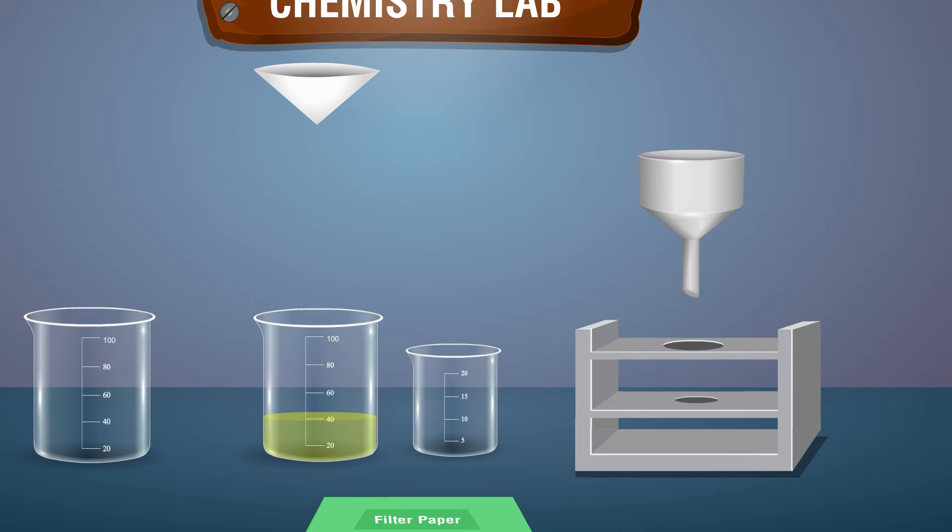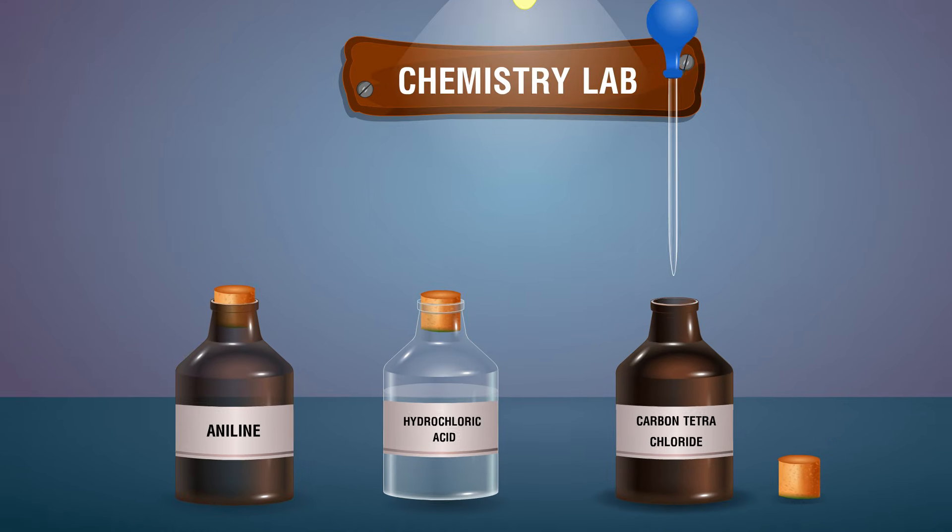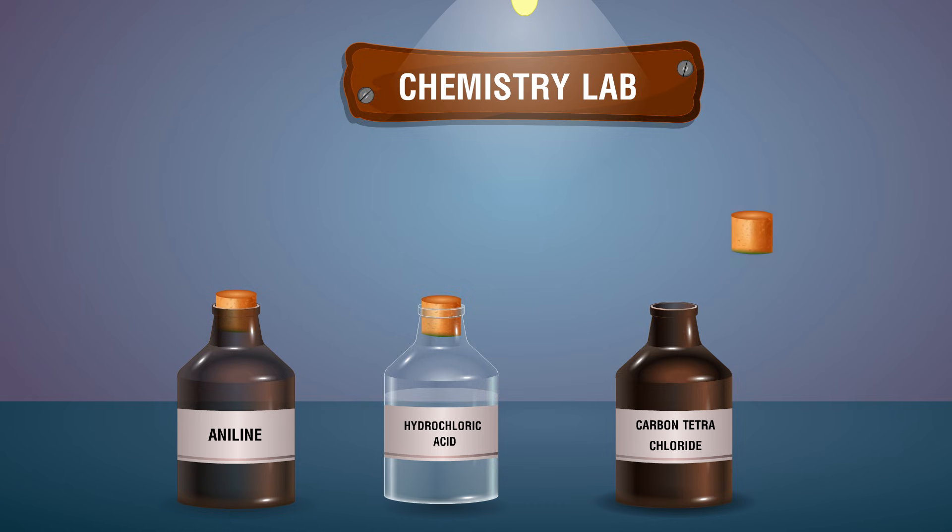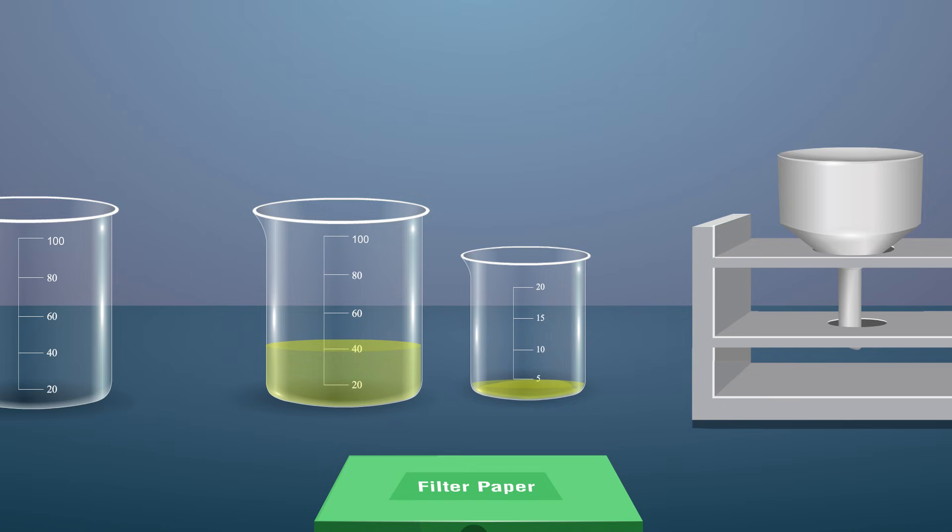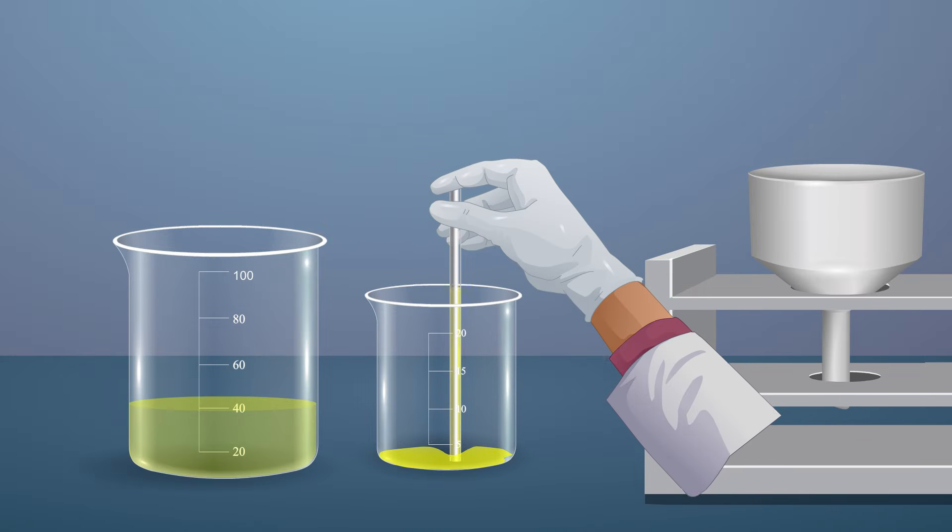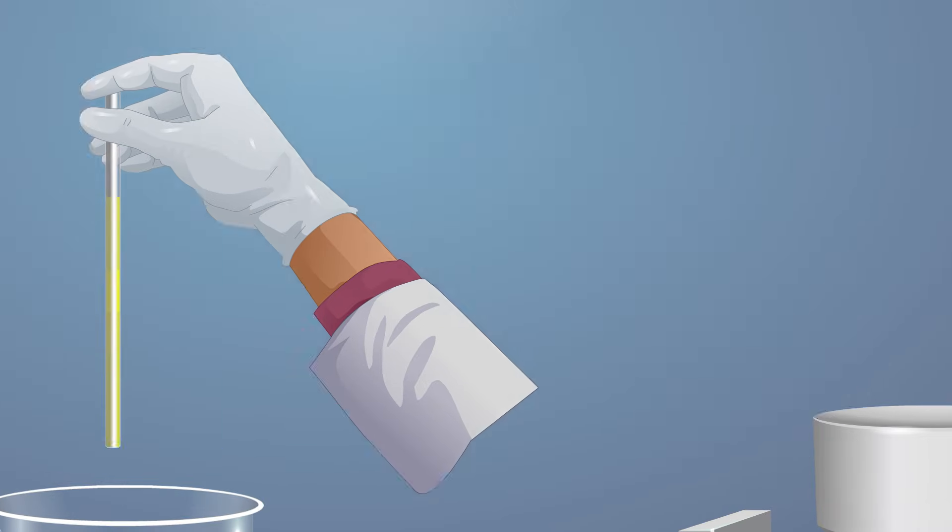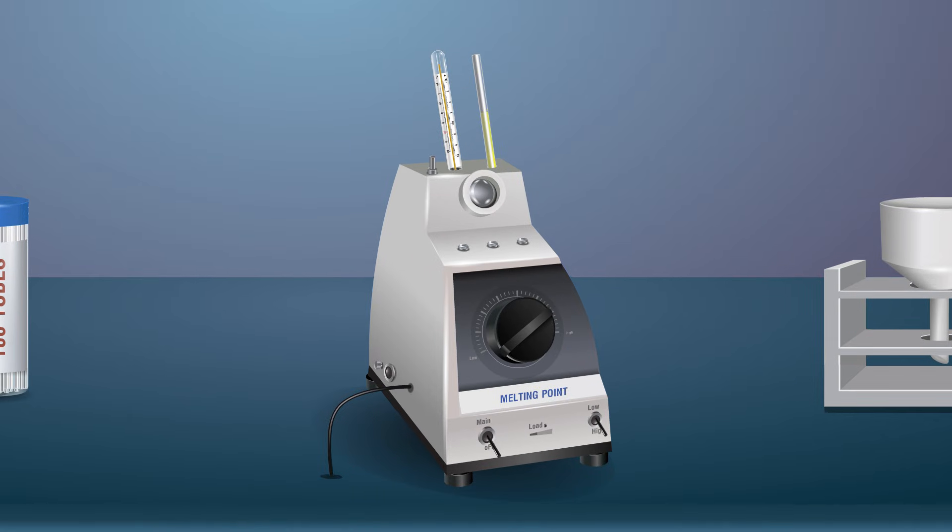Recrystallize the crude sample. Transfer the crude sample into the beaker and add carbon tetrachloride using a dropper into the beaker to get the pure dye. Take some compound in the one end closed capillary and place it in the melting point apparatus. Place a thermometer in the melting point apparatus to note down the temperature.